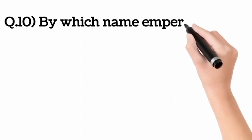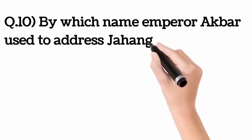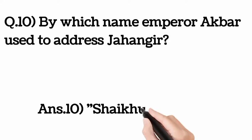Question number 10: By which name did Emperor Akbar use to address Jahangir? Answer: Shekhu Baba.